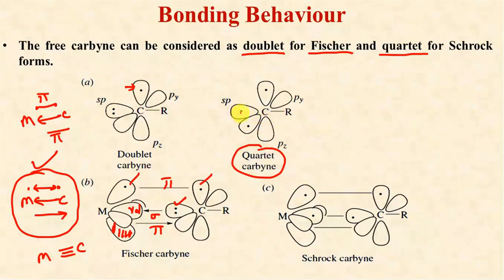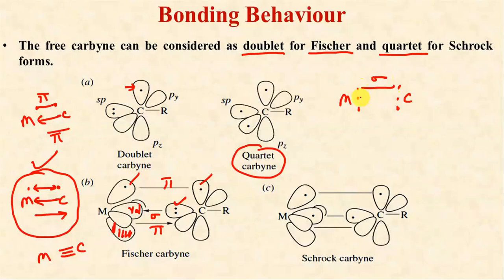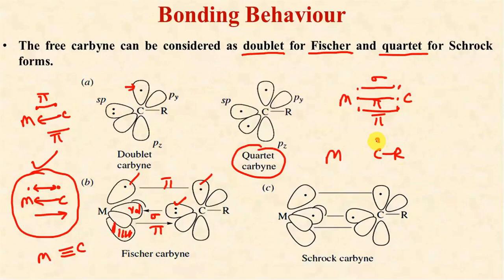In the case of quartet carbynes, the metal-carbon bond can be considered as a sharing of three electrons from metal and three unpaired electrons from carbon, resulting in one sigma and two pi bonds. There is also a theory which says that the metal initially transfers three electrons — so the metal loses three electrons to form M³⁺ — meaning carbon then has fully filled p orbitals, which overlap with vacant d orbitals of the metal to form three metal-carbon bonds. This is the bonding behavior in the case of Schrock carbynes.